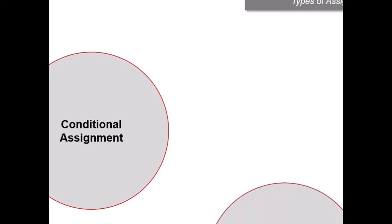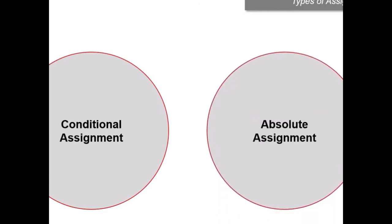Second is absolute assignment. It states that all rights, title and interest which the assigner has in the policy are transferred to the assignee without reversion to the former or her estate, in any event. Absolute assignment is more commonly seen in many commercial situations where the policy is typically mortgaged against a debt assumed by the policyholder, like a housing loan.